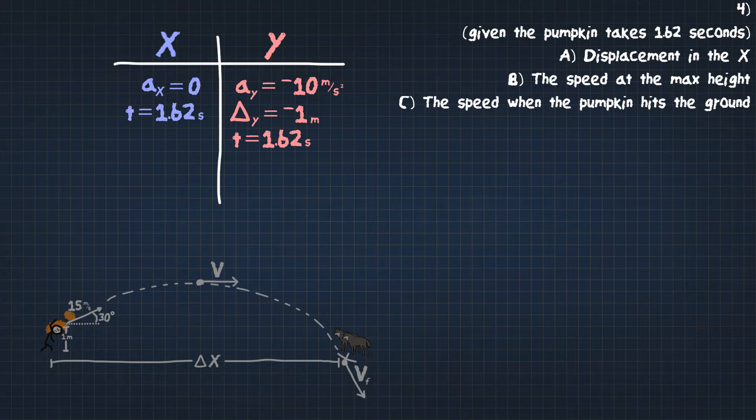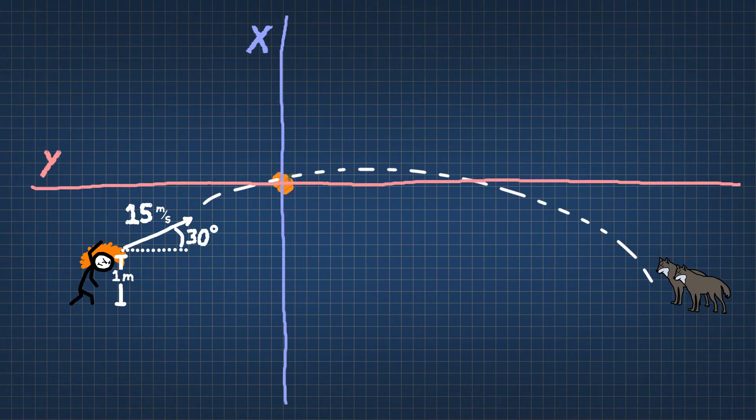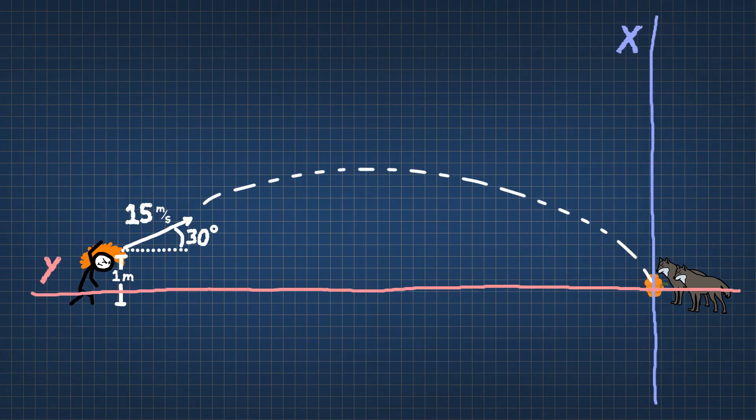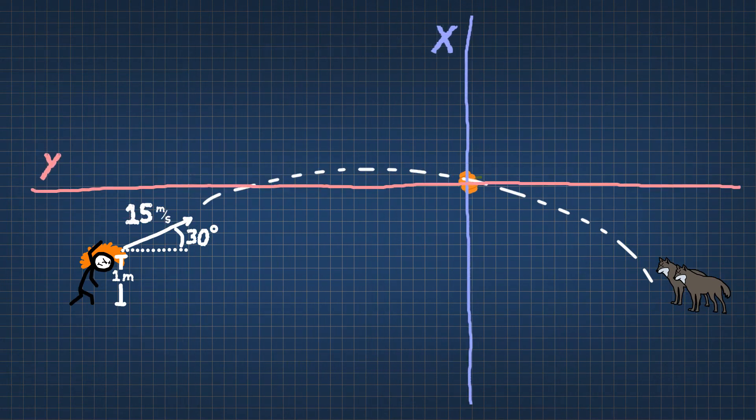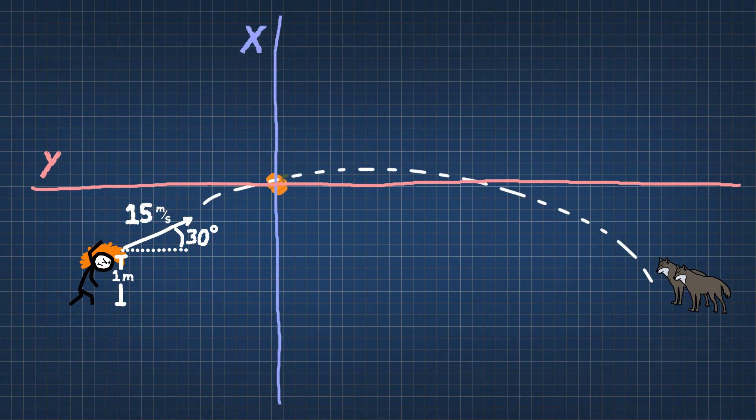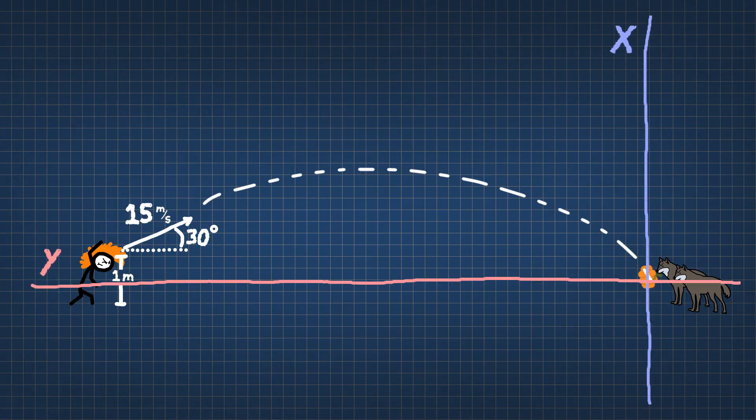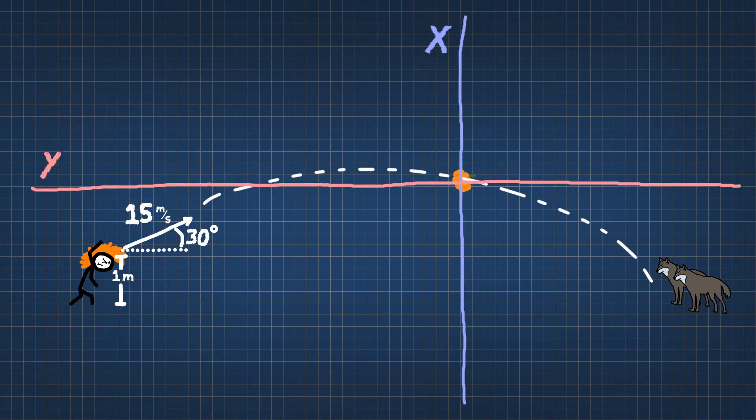This is where it gets a little bit different. With angled problems, when something is thrown at an angle, what we need to do is we need to break it up into its x and y components. So we need to find what the velocity is in the y direction that it was thrown with and the velocity in the x.